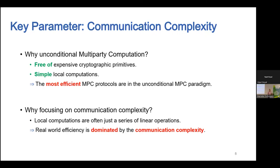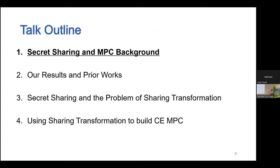To achieve unconditional security, a majority of parties must be honest — if we have n parties, more than half must be honest; otherwise unconditional security is impossible. The advantage of unconditional security is that it's free of expensive cryptographic operations — most operations are simple linear operations. The most efficient MPC protocols are in the unconditional MPC paradigm. We focus on communication complexity because, under unconditional security, local computations are just linear operations and real-world efficiency is dominated by communication rather than local computation.